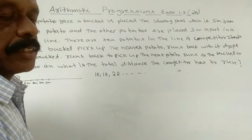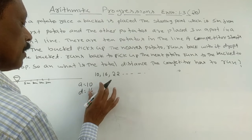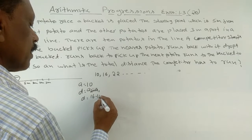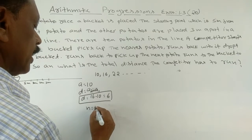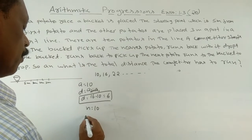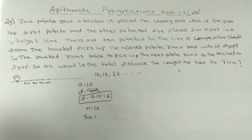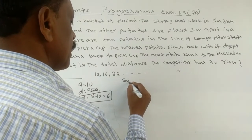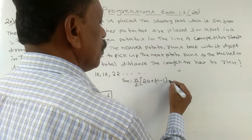For the second potato the competitor runs 16 meters, for the third potato 22 meters, and so on. Therefore a is equal to 10, d is equal to a2 minus a1 = 16 minus 10 = 6. So d is equal to 6 and n is equal to 10, because there are 10 potatoes. We want to find Sn, the total distance the competitor has to run, using the formula Sn = n/2 × (2a + (n−1)d).